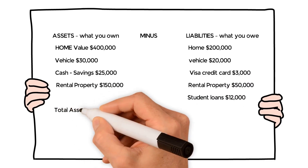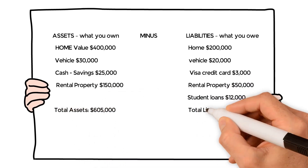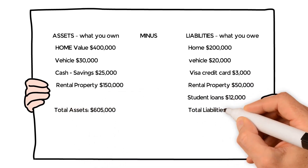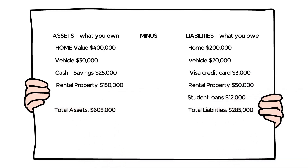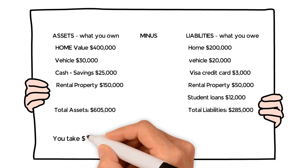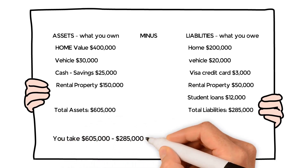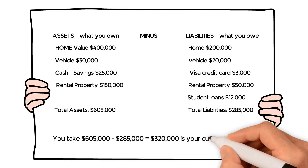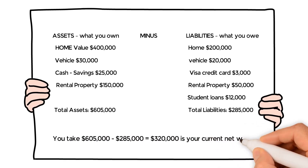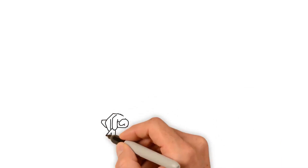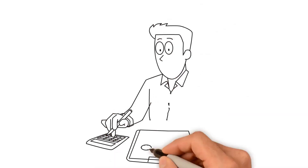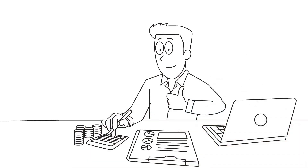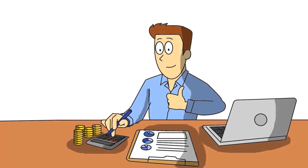Total assets: $605,000. Total liabilities: $285,000. You take $605,000 minus $285,000 equals $320,000 as your current net worth. Monitoring your net worth on a periodic basis will help you keep your finances in order.